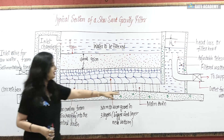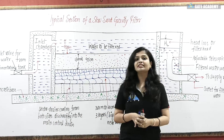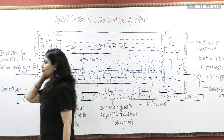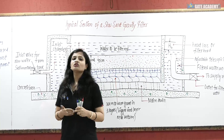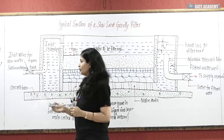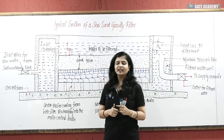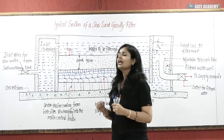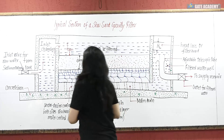Above the base we have lateral drains and a main drain. There is also an inlet arrangement and an outlet arrangement. Regarding sand particle sizing: the D10 effective size is 0.2 to 0.4 mm for slow sand gravity filters. The uniformity coefficient CU, which is D60 divided by D10, has a different value in slow sand gravity filters compared to rapid sand gravity filters. Head losses are also important and will be covered in numericals.